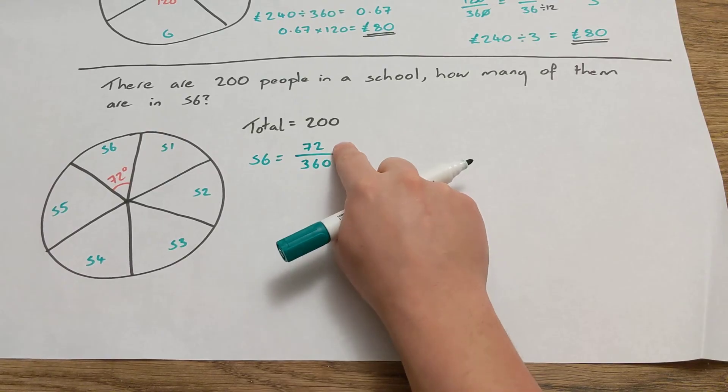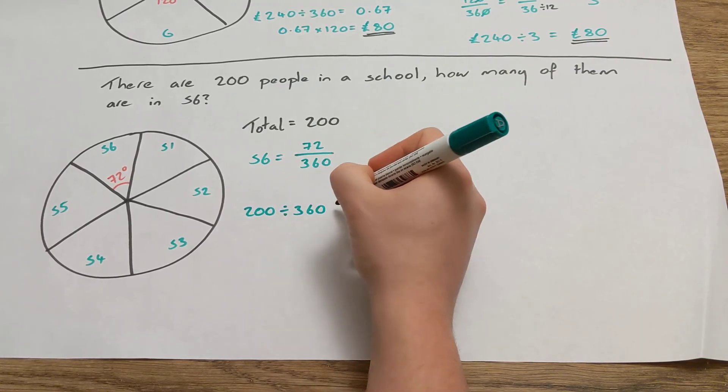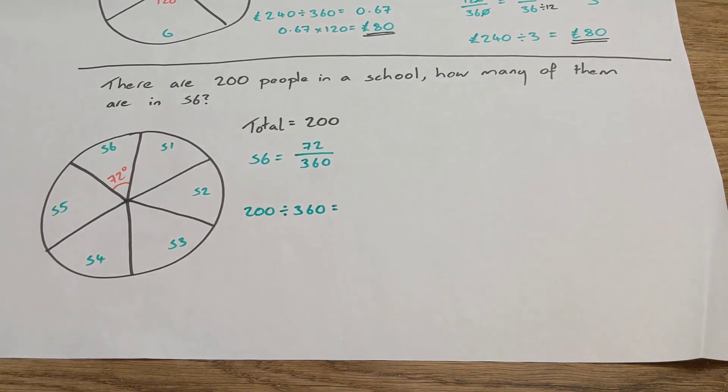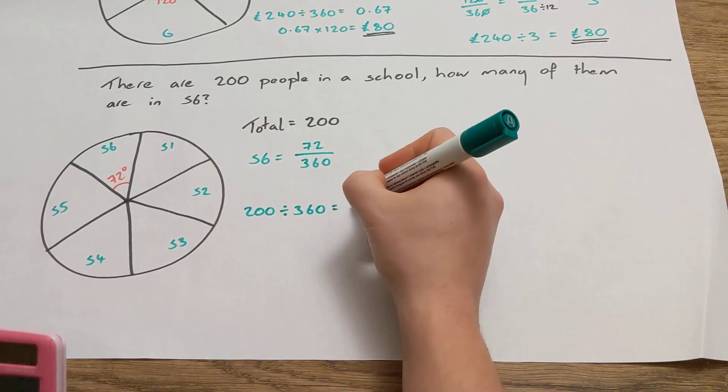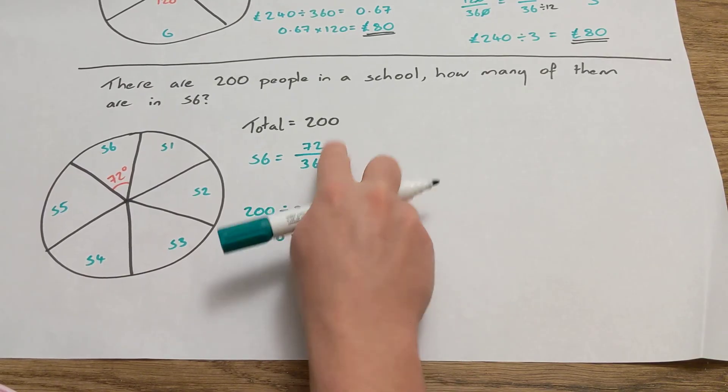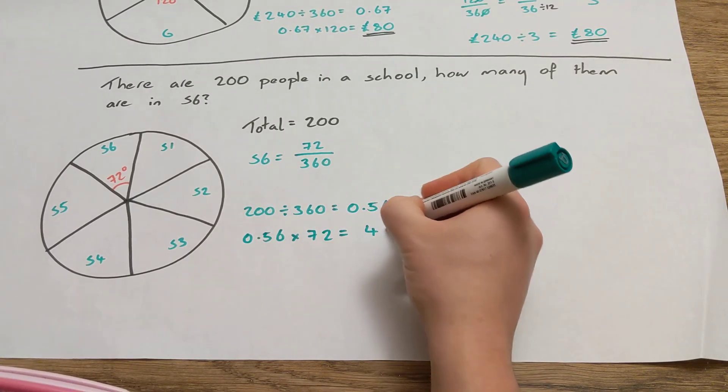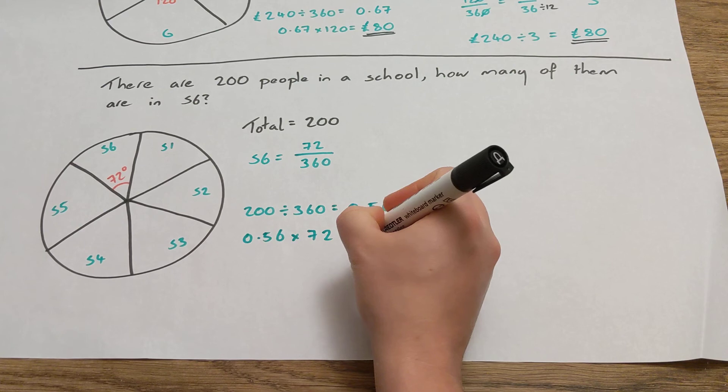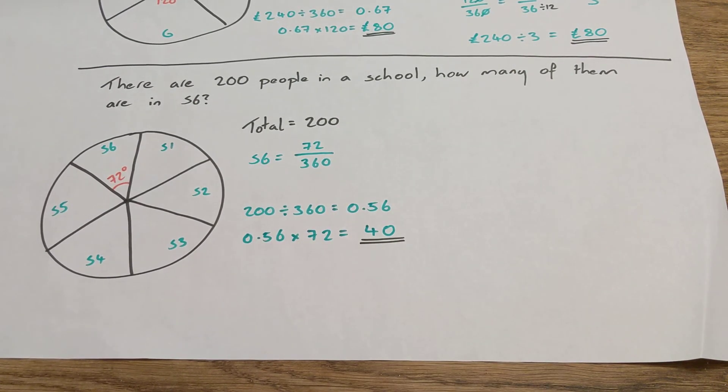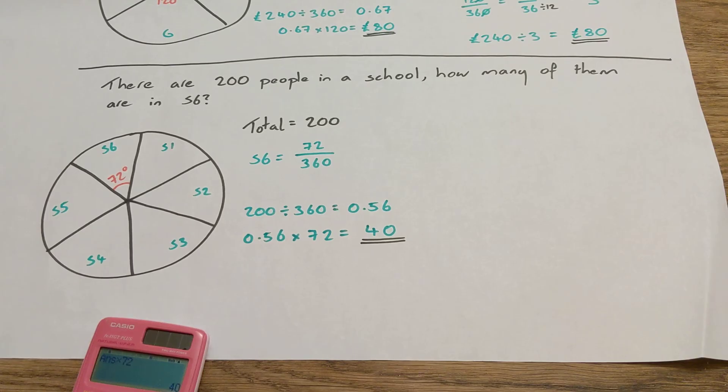And so we'll work it out the same way we did the last one, divide by the bottom number times by the top. So that means we've got 200 divided by 360. I'm going to write the answer to each stage here, you wouldn't really have to. So we've got 200 divided by 360 which equals 0.56, and then we're going to do the 0.56 times by 72 because that's what the top of the fraction is. Times by 72 gives us 40 people. So this is a weird school that has 40 people in S6 when it's such a small school, but I don't know, maybe everyone loves staying on. So we've divided by the bottom which was the whole pie, 360, then we've times by the top to get how many people.